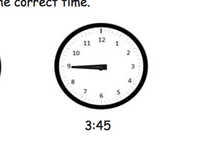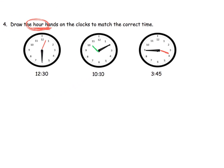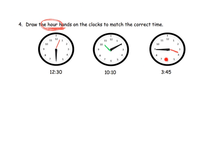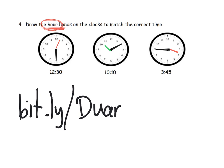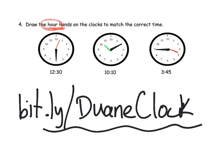For 3:45, we know the hour hand would not be directly at the three — it would have to be rotated somewhat, right around there. This is a great example of how the GeoGebra applet might be a great way for students to predict where the minute and hour hands are when given the digital time. Shameless plug: bit.ly slash DwayneClock — that's going to allow you to practice with your students placing the hour and minute hand on the clock.